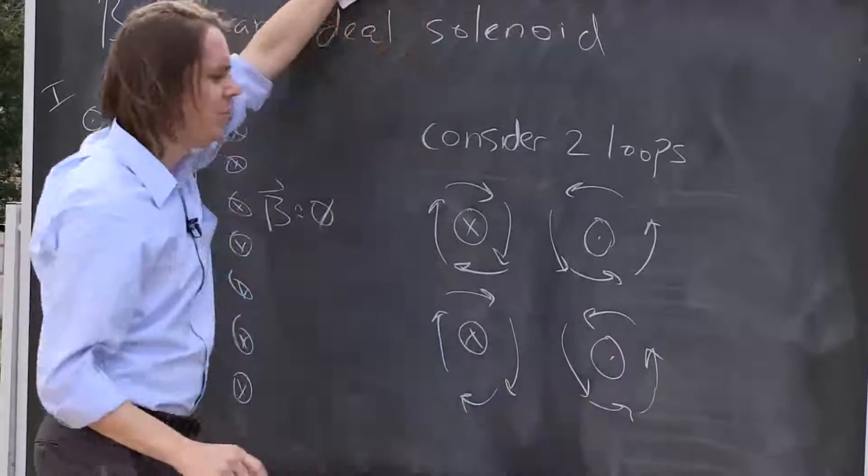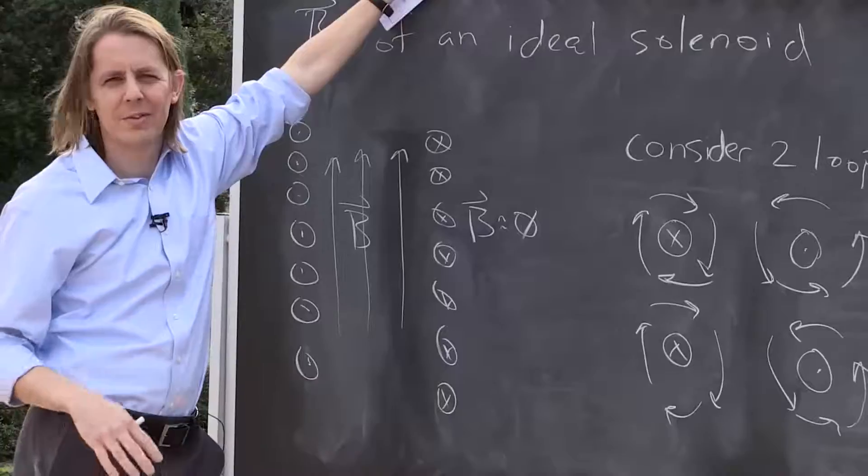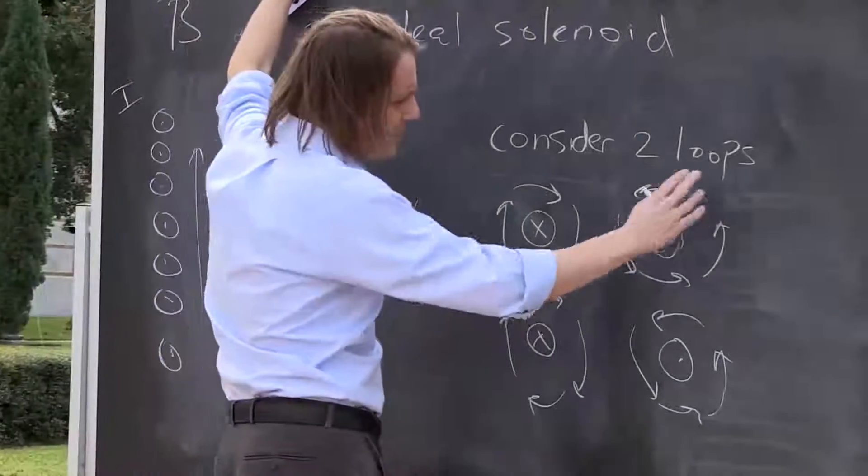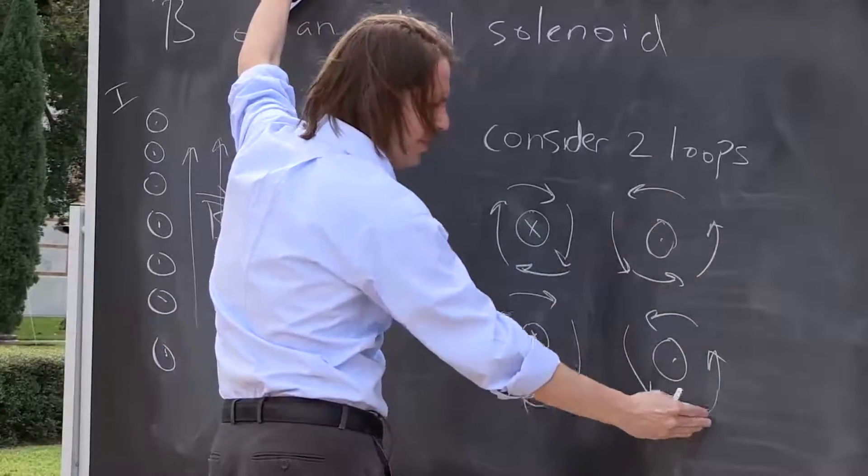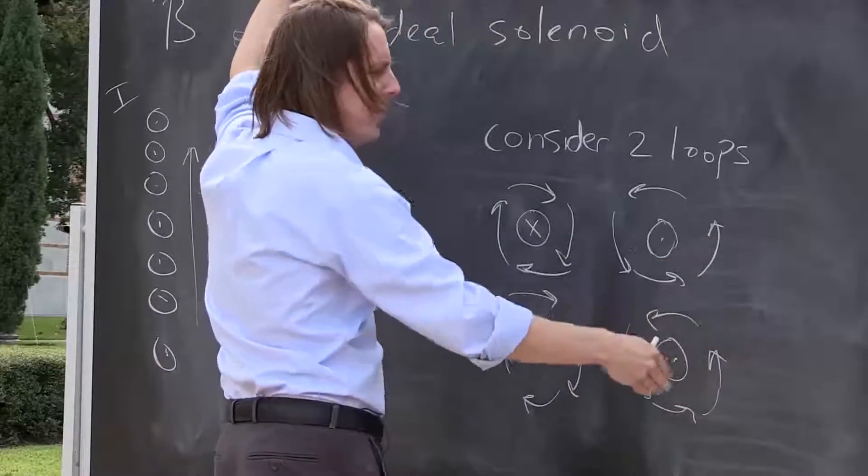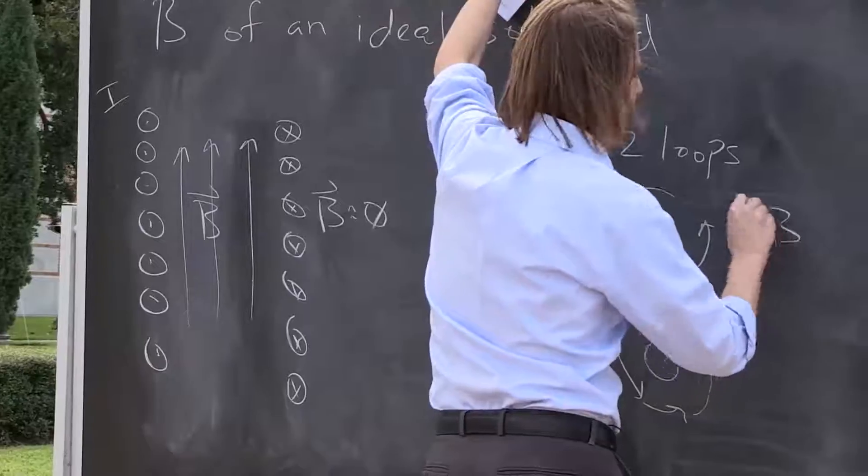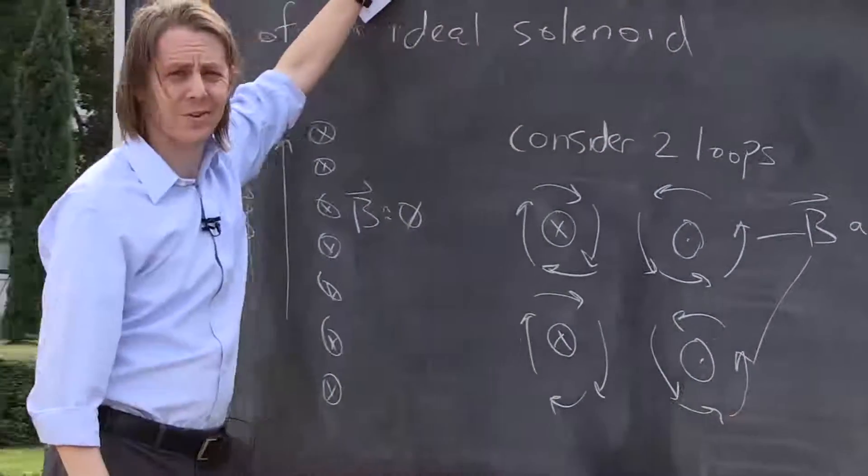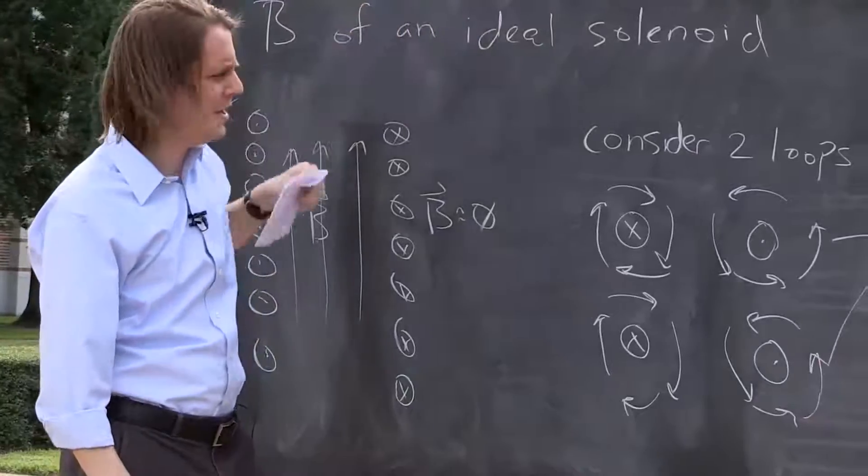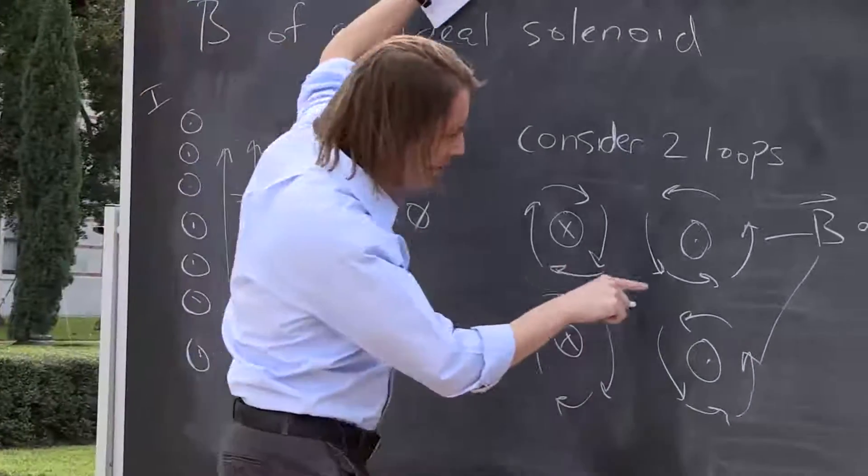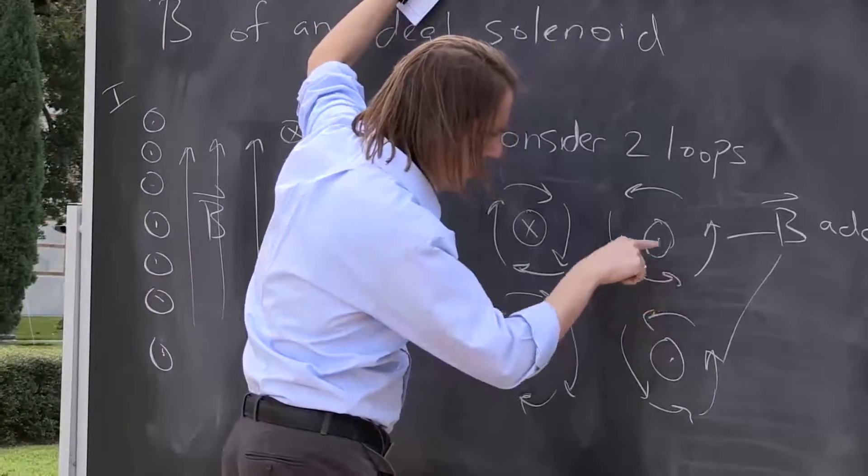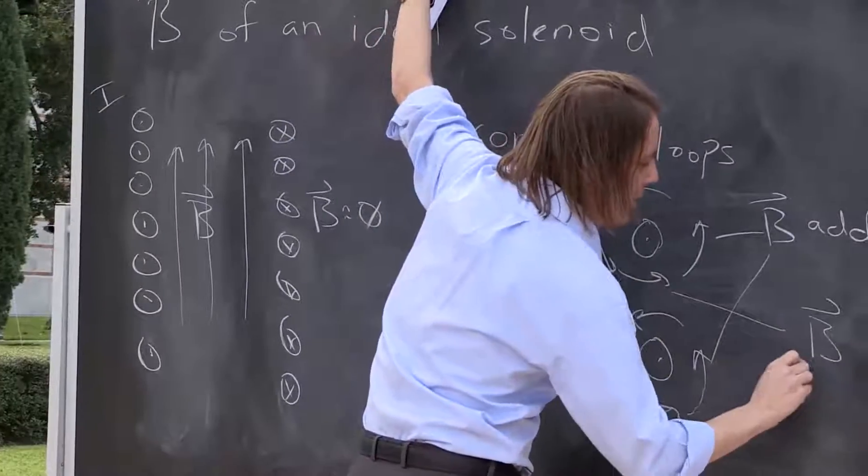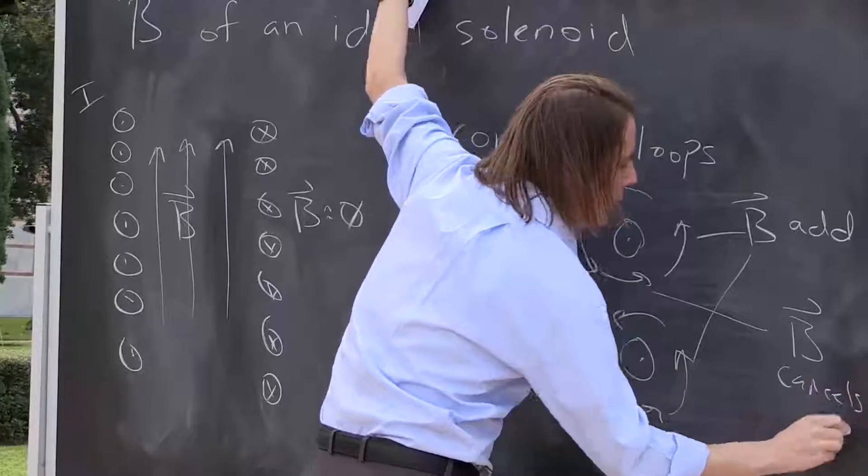Now one thing that's easy to get tempted to think is that there's no field outside because the field cancels. That's not really right, because look, here's the outside of the solenoid. The B field is up, and the B field is up. So here, these B fields add. There's no cancelling of the B field to make it weak outside, but look right here. Here the B field is that way below this wire, and it's that way above that wire. So there, the B cancels.